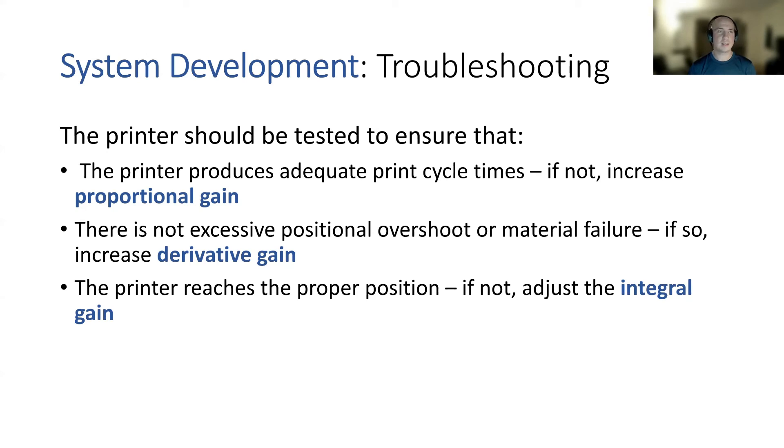So the final thing we're going to be looking at is system development. Here we're going to be taking another look at troubleshooting. Really, this is going to be the same troubleshooting technique that we took from the PID tuning section. So you're going to take a look at your physical system after you've prototyped it. You want to ensure that the printer produces adequate print cycle times. If it doesn't, increase your proportional gain.